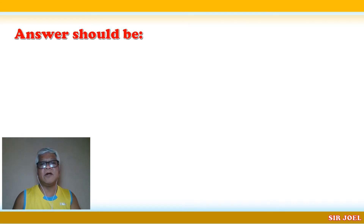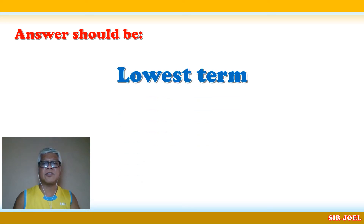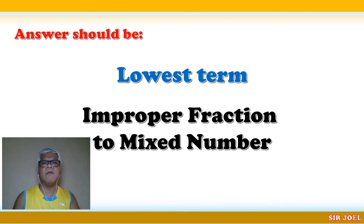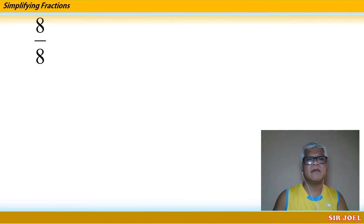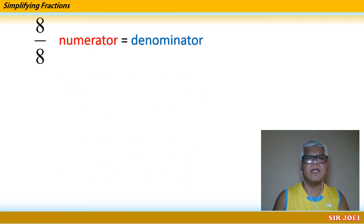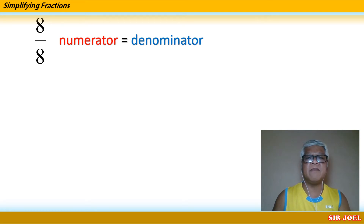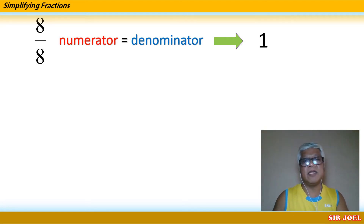Maybe some of you noticed that some of our answers are not yet written in their lowest term, and some improper fractions are not yet converted into a mixed number. So lowest term and converting improper fractions to mixed numbers are our topic for today's lesson. In one of the answers, we have 8 over 8. If the numerator is equivalent to its denominator, then the answer is 1. Meaning to say, if the numerator and denominator are the same number, the answer is automatically 1.